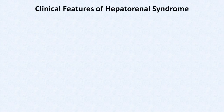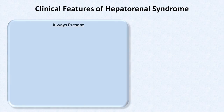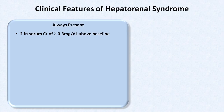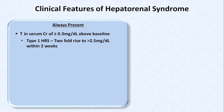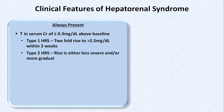Regarding clinical features, things that are always present include an increase in serum creatinine of at least 0.3 mg per deciliter above baseline. Hepatorenal syndrome is subdivided into two types based largely on severity. In type 1, the more severe form, there is a two-fold rise to a creatinine above 2.5 that occurs within two weeks. In type 2, the rise is either less severe and/or more gradual.